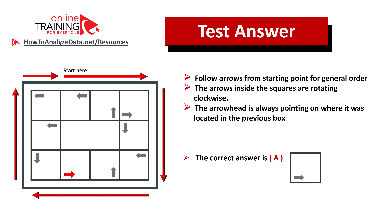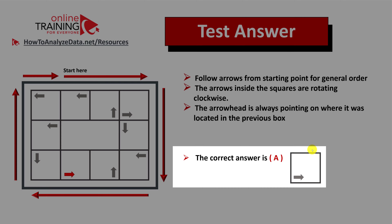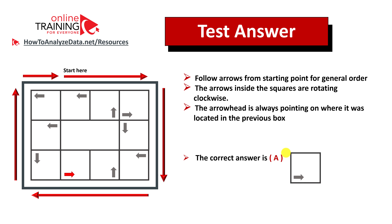There are a couple of tricky parts about this question. Number one is the general flow of squares — it starts not in the corner but in the middle of the upper row, and you need to follow the red arrows for general order. The arrows inside the squares rotate clockwise, and the arrowhead for the smaller arrow always points to where it was located in the previous box. The correct answer is choice A.